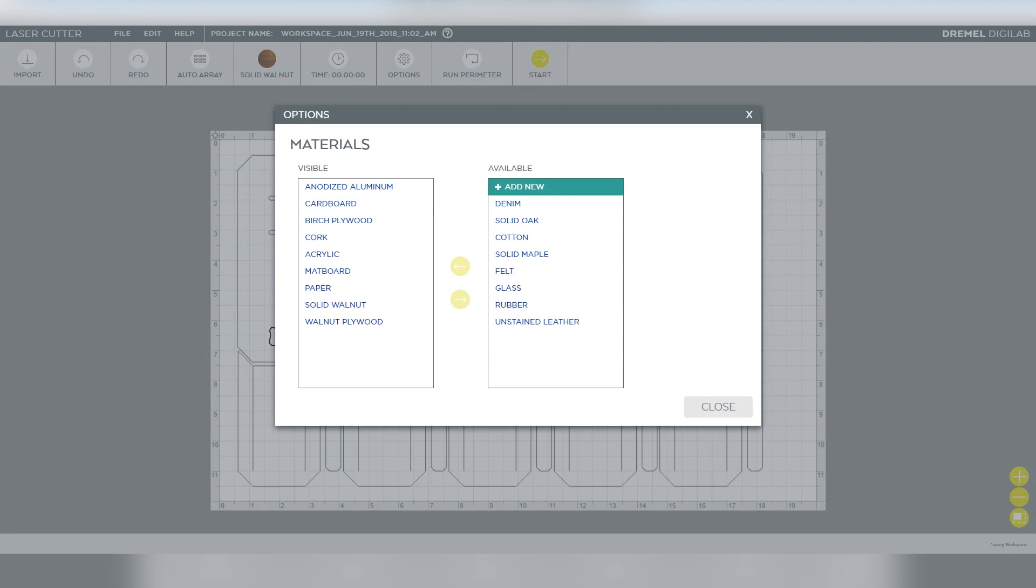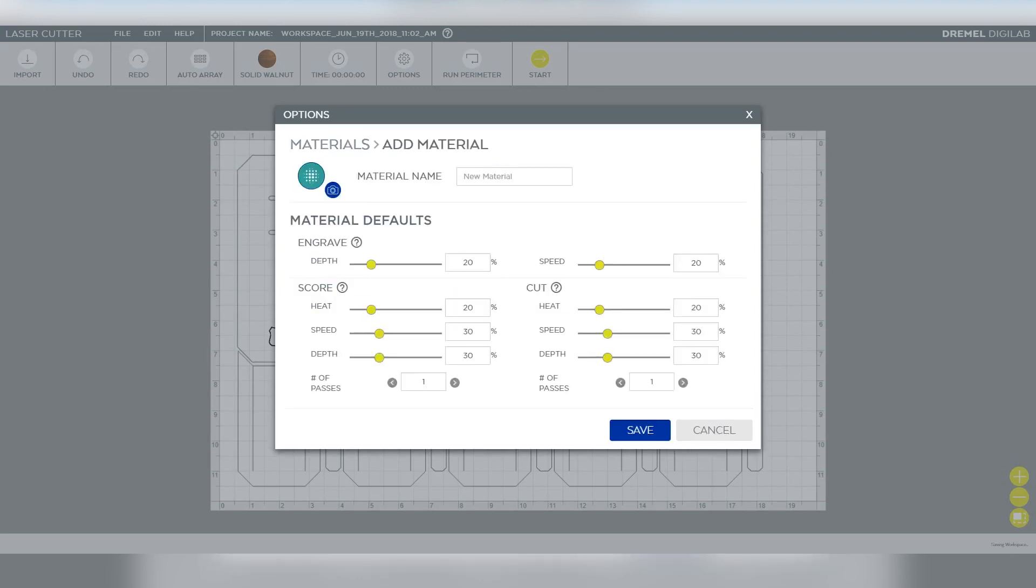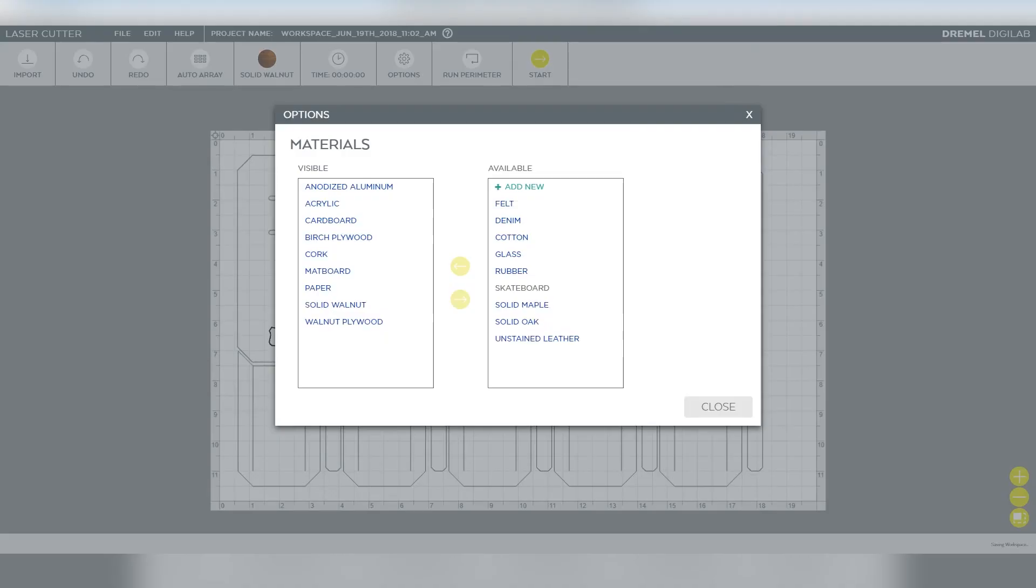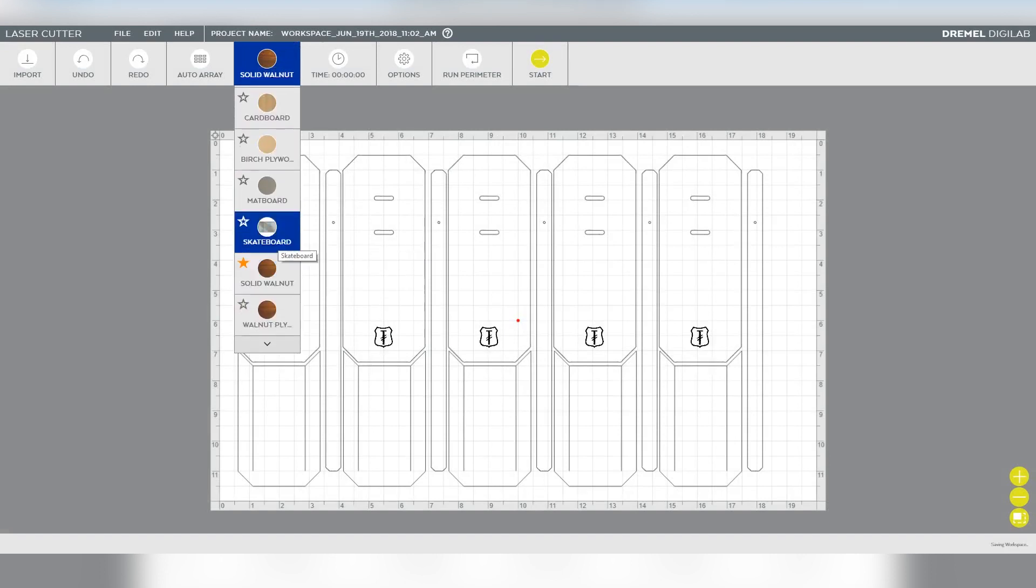You can put your own material in here. If I wanted to create a material for those blank skateboards, I can call it skateboard, bring in a little picture of a skateboard so I know what that material is, and then I can tell it what settings I want it to use for the skateboard material. Once I save it, then pull that material into my frequently used, and now I can use my skateboard material.